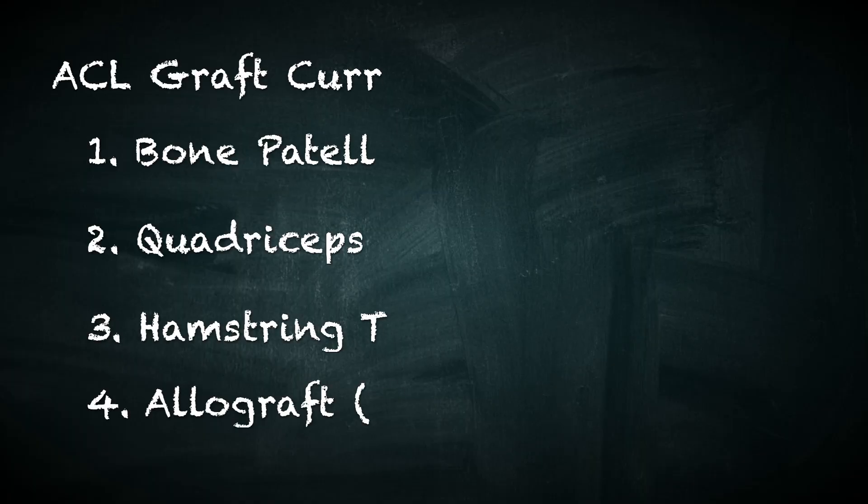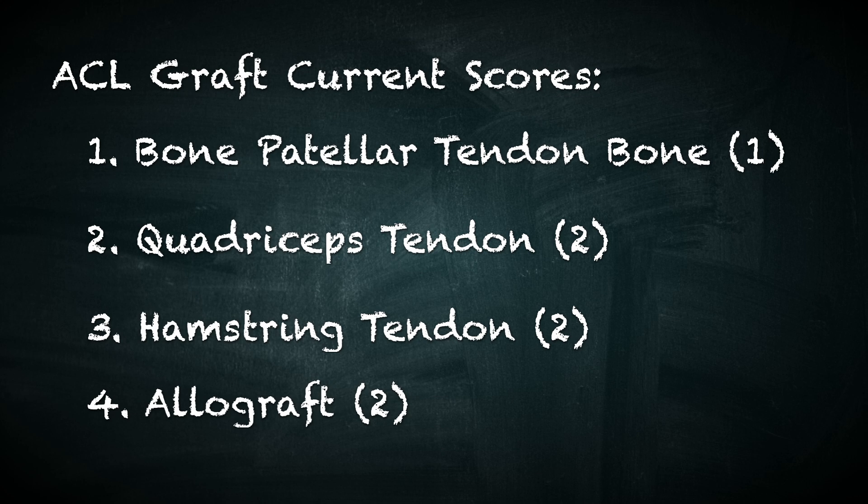Because allografts don't come with any risk of donor site pain or muscle weakness after surgery, they receive two points. However, due to the allografts' increased risk of infection and graft rejection, one point is also docked. No points will be awarded to the bone-patella tendon bone autograft due to the increased risk of anterior knee pain.